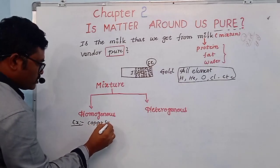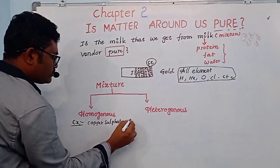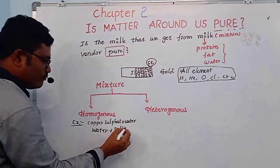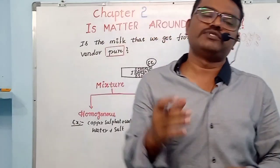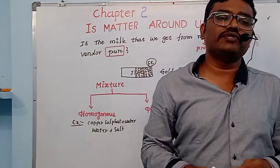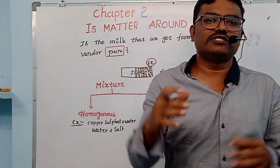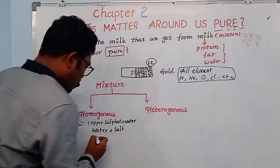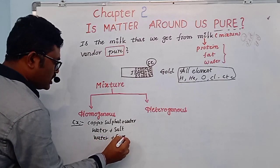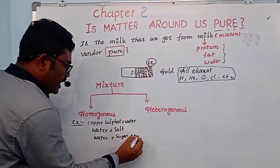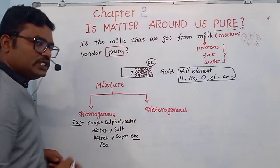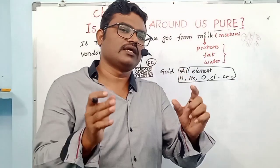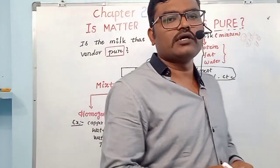Copper sulfate plus water is a homogeneous mixture. Water plus salt — when you mix salt completely into water, the taste is the same throughout the mixture. Water plus sugar is also a homogeneous mixture. Tea is also a homogeneous mixture. The mixture in which the color, taste, and composition are the same throughout is called a homogeneous mixture.